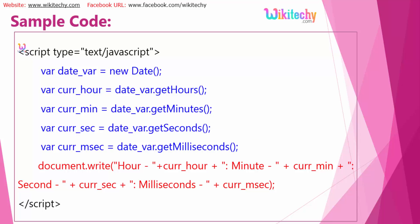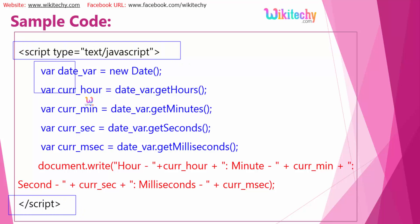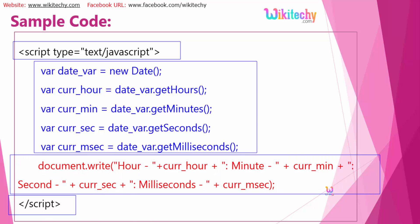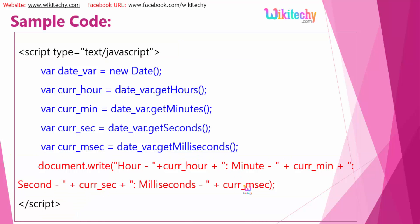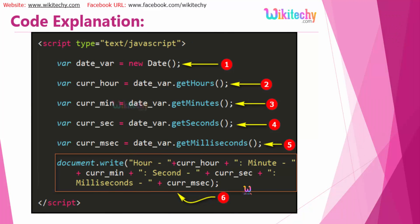Here is the script tag, the type is JavaScript, and here are the variables I am trying to print: hour for the current hour, current minute, current second, and current millisecond. And here is a colorful piece of code which I want to show you. Let me go back to my practical example to show you how it works.